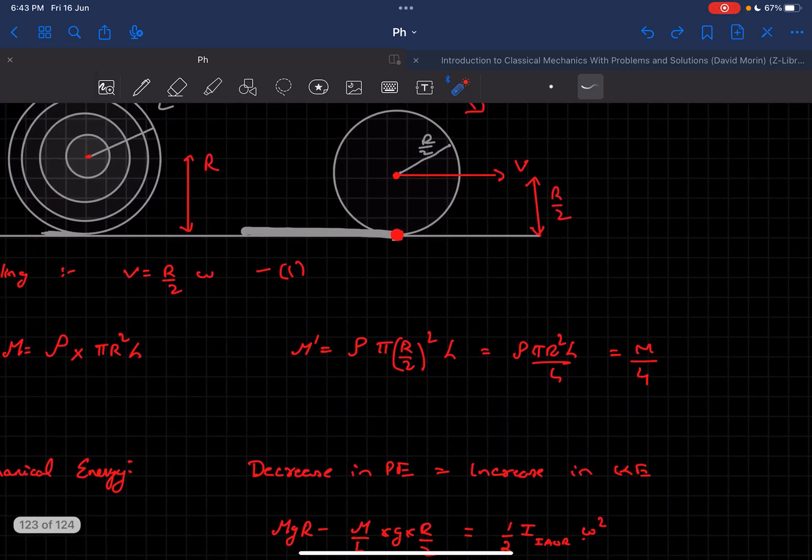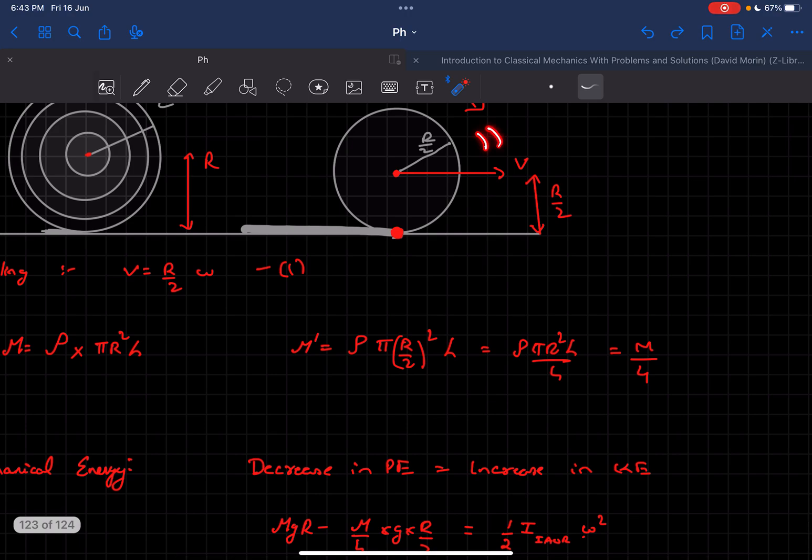As the object is undergoing pure rolling motion, we can write the kinetic energy of this rigid body as half I about the instantaneous axis of rotation, and in this case it will be this line passing through the contact point.